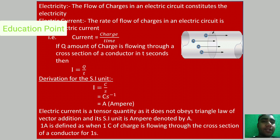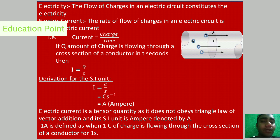To derive the SI unit of electric current: since current equals charge upon time, the SI unit of charge is coulomb — as we know from Coulomb's law — and the SI unit of time is second. Therefore, the SI unit of electric current is ampere, because coulomb per second is the result given by André-Marie Ampère.